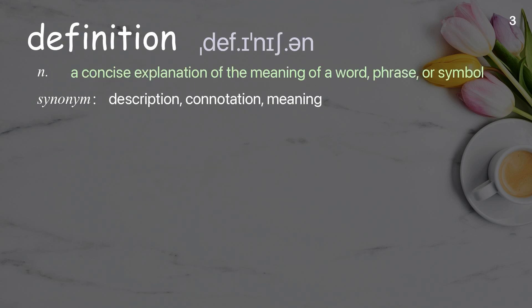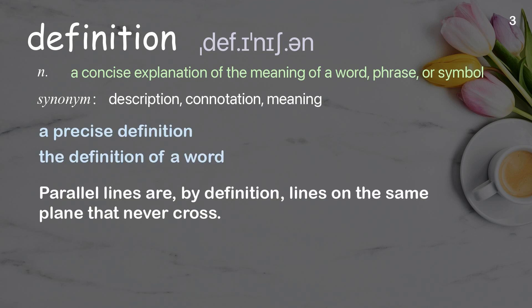Definition: a concise explanation of the meaning of a word, phrase, or symbol. Examples: a precise definition, the definition of a word. Parallel lines are by definition lines on the same plane that never cross.